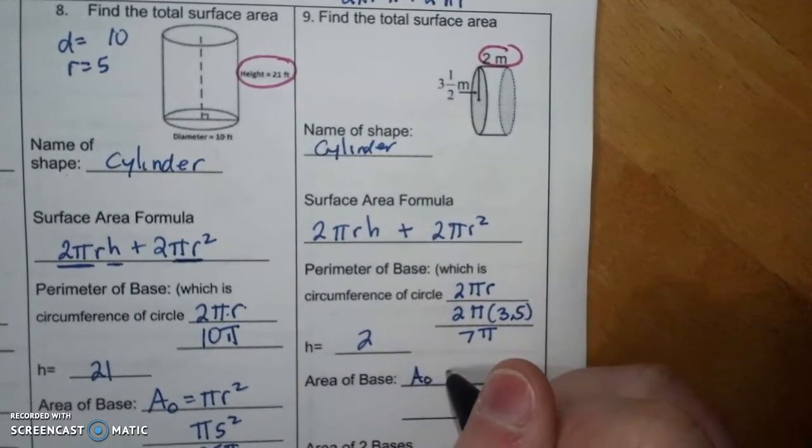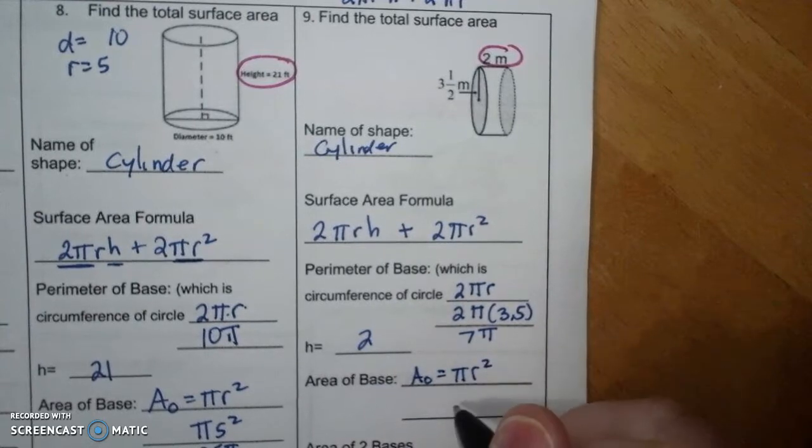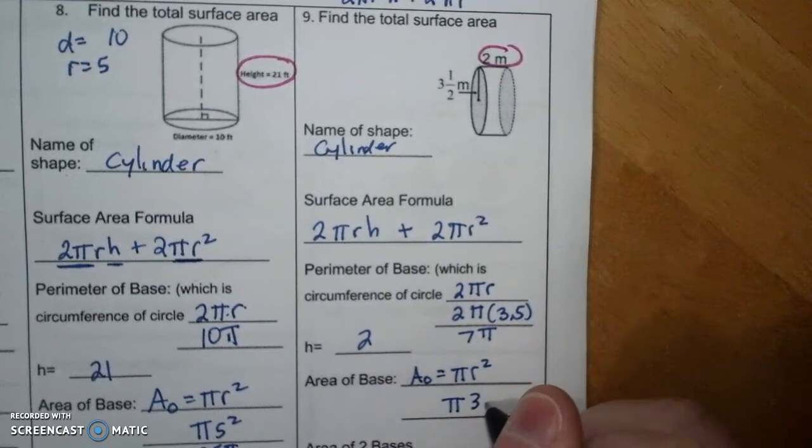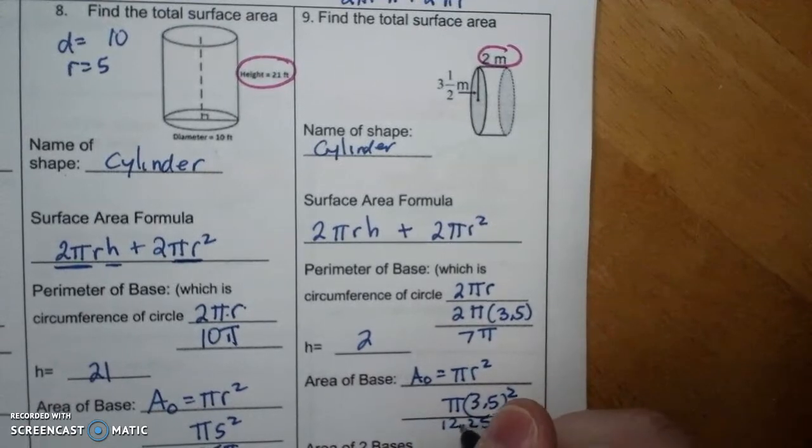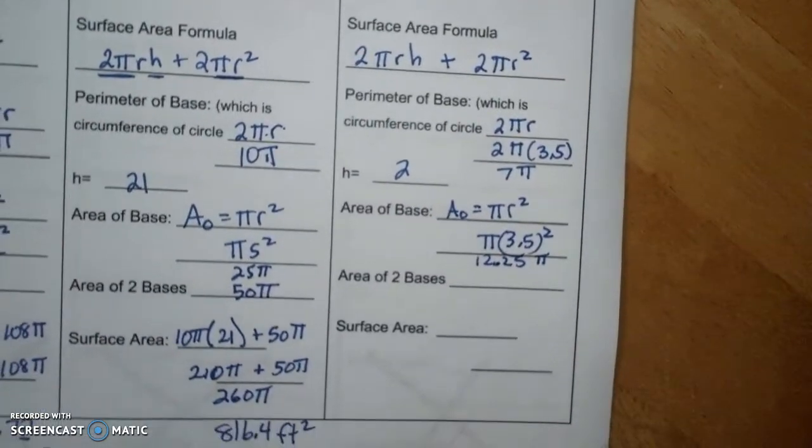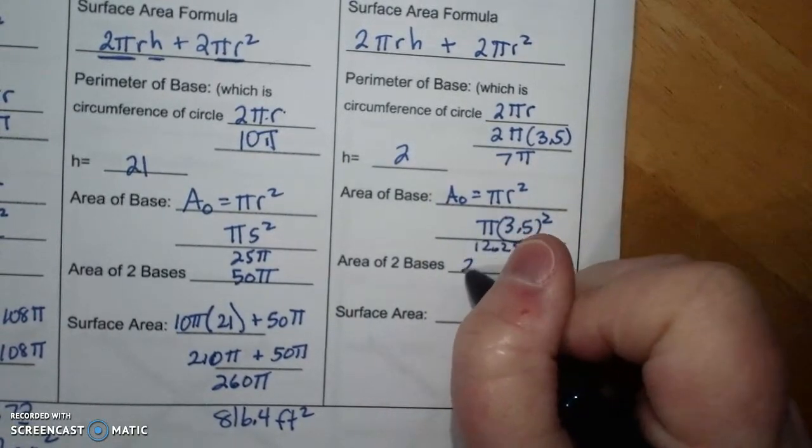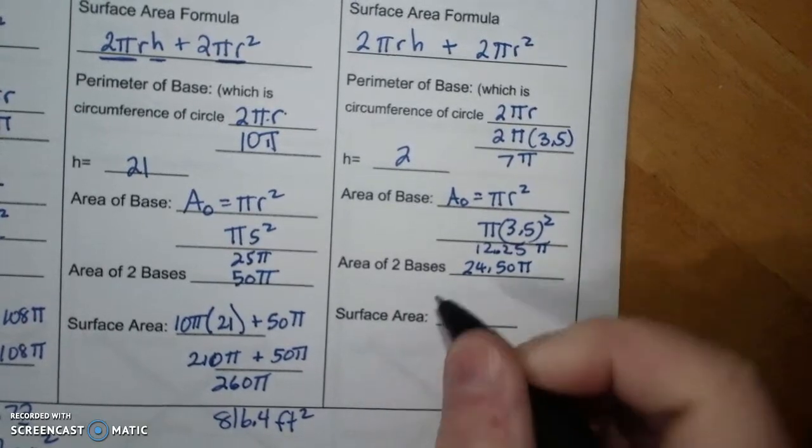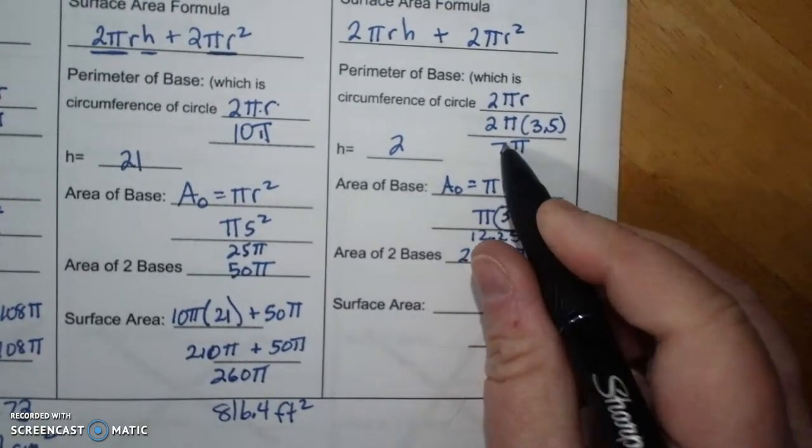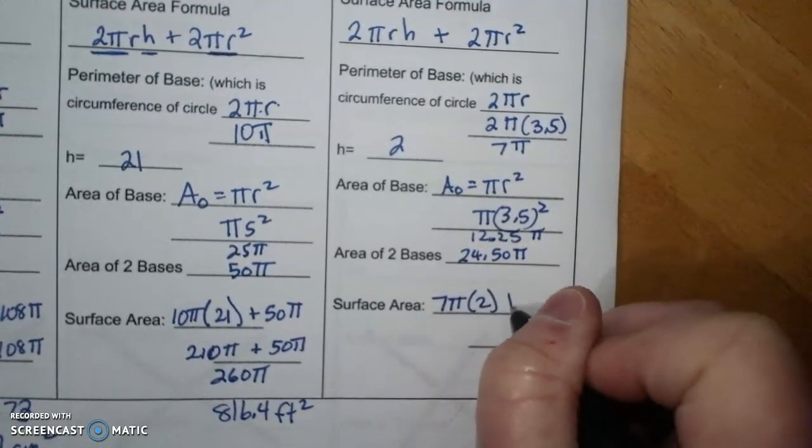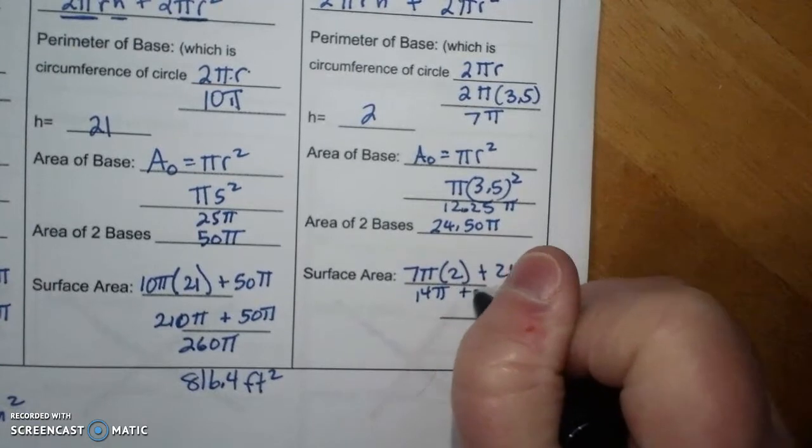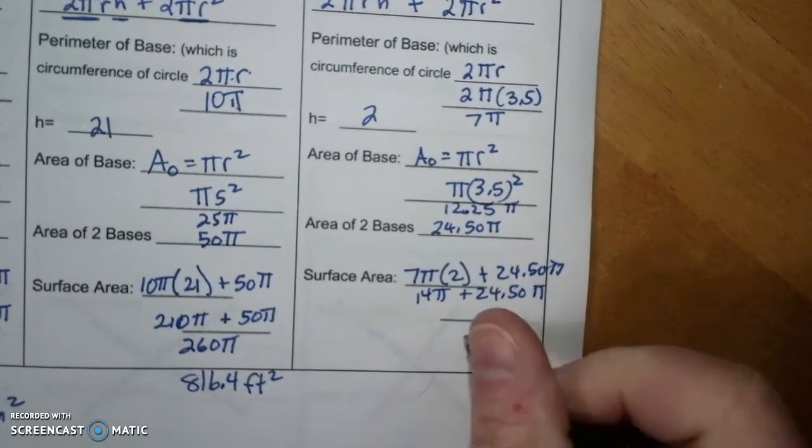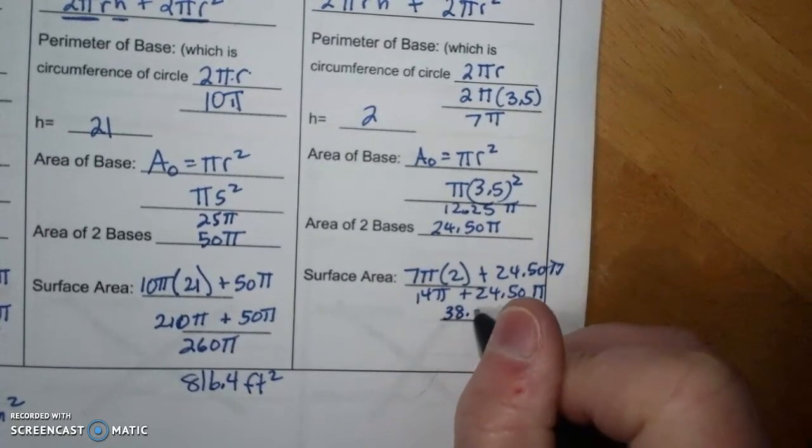The area of the circle is πr squared which is π times 3.5 squared, which is 12.25π. Notice I'm keeping π until the very very end and then this is 24.50π.